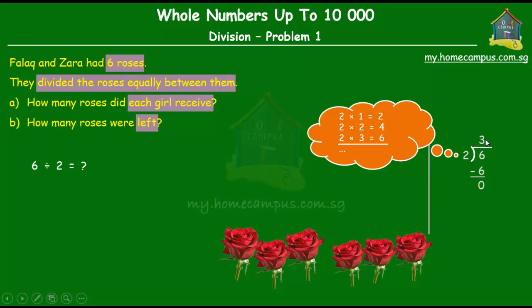Alright, now we have two numbers that we got here. We got the number three, and we got the number zero. This number three, which tells you how many times two can go into six, is called the quotient. Okay, and this number zero over here tells us that six when divided by two leaves a remainder of zero.